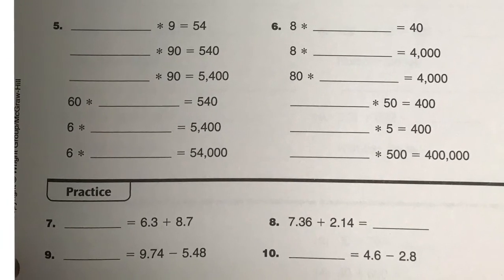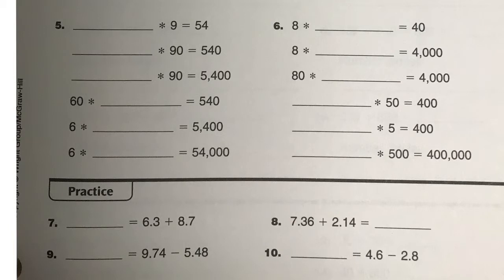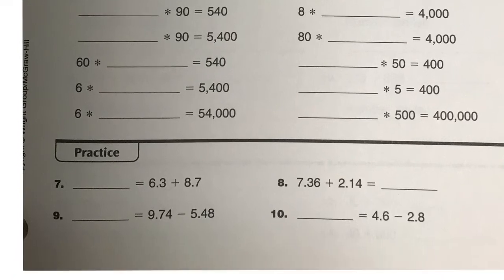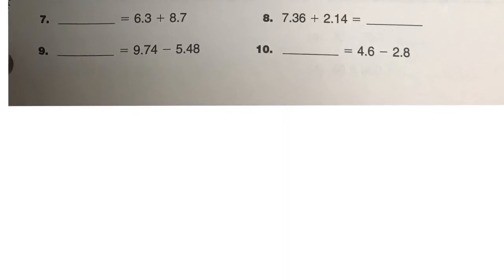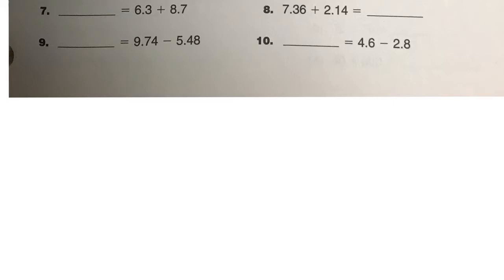And then once again, we've got some decimal points to deal with for our addition and subtraction. And if you remember from the previous one, the important thing to do here is line up your decimals. So if I'm writing 6.3, 8.7 needs to line up. The decimal is lined up. 1's place, 10's place.